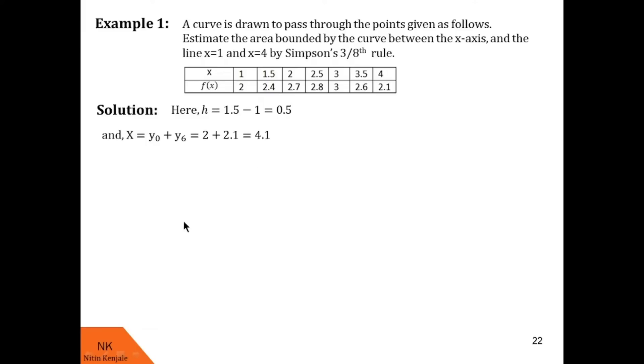Now let us calculate capital T. Capital T is sum of the ordinates which are multiples of 3. So here we found there is y0, y1, y2, y3. Y3 is there. So T consists of this y3 and y4, y5, y6. But y6 is already taken in capital X. So T will consist of only y3. So T is 2.8.